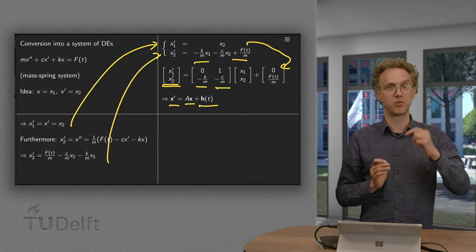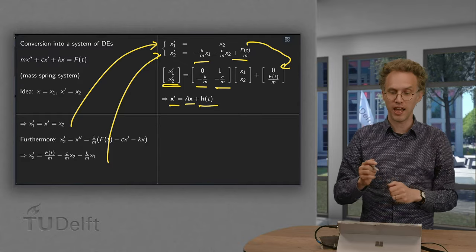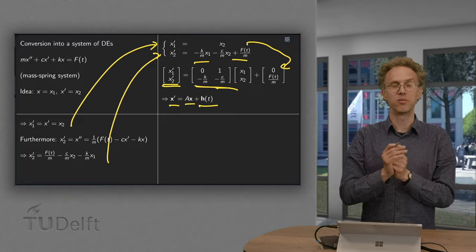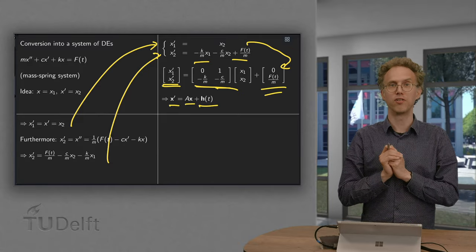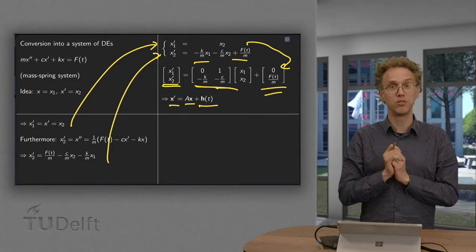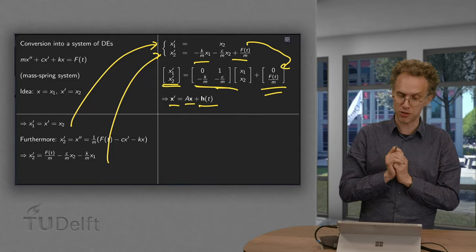Where x prime is a vector containing x1 and x2. A is this matrix over here containing a bunch of constants. And h of t contains the forcing here, some terms that do not depend on x1 and x2.